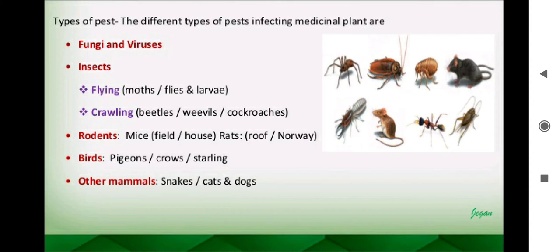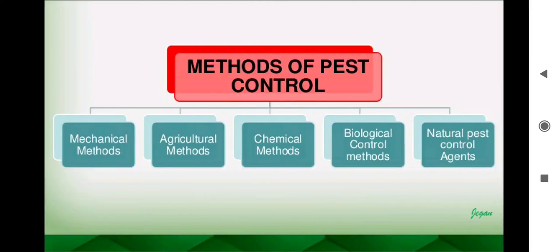There are also insects — the total number of insects in this world is greater than all other organisms combined, making them very harmful. As seen in the image, there are many insects, animals, vertebrates, and invertebrates. Rodents include field mice, house mice, rough rats, and Norway rats. Different types of birds such as pigeons, crows, and starlings can damage crops. Other mammals like snakes and cats are also included.